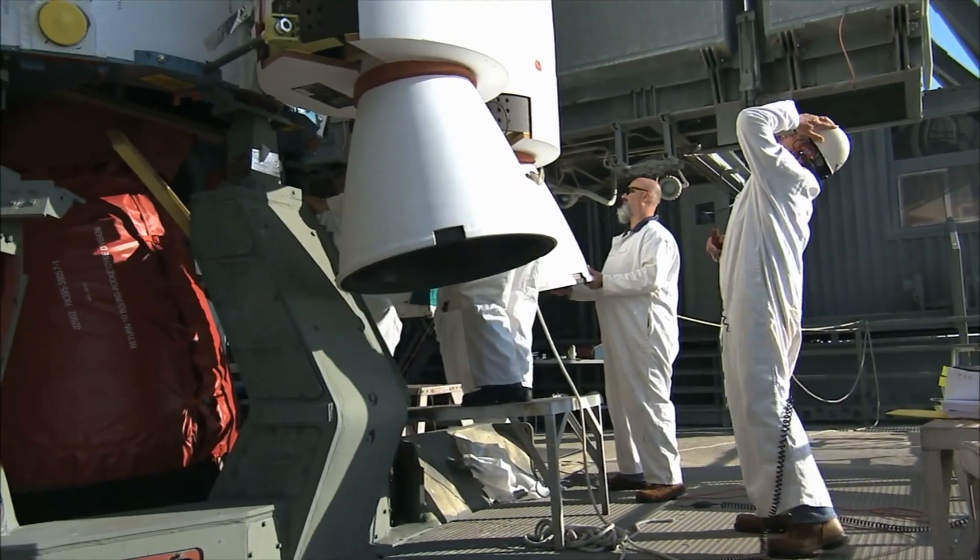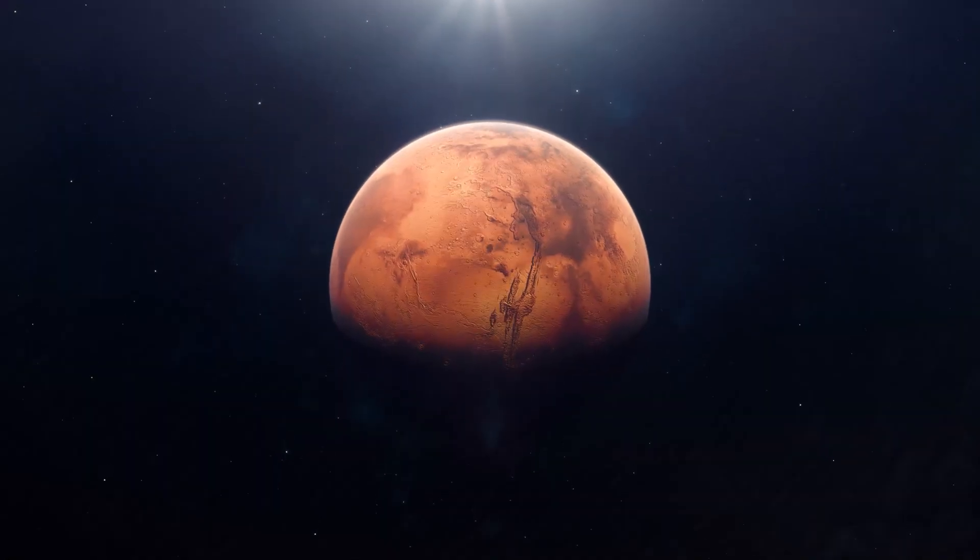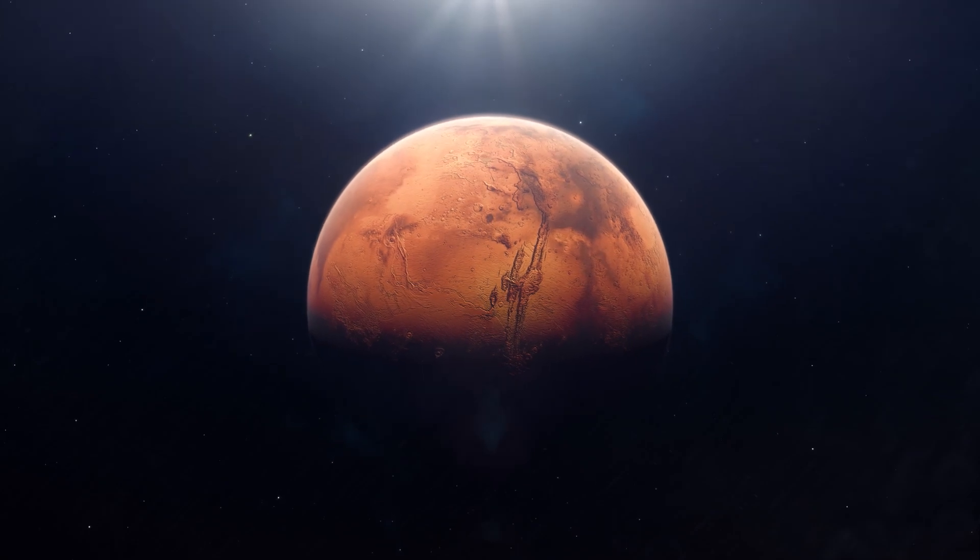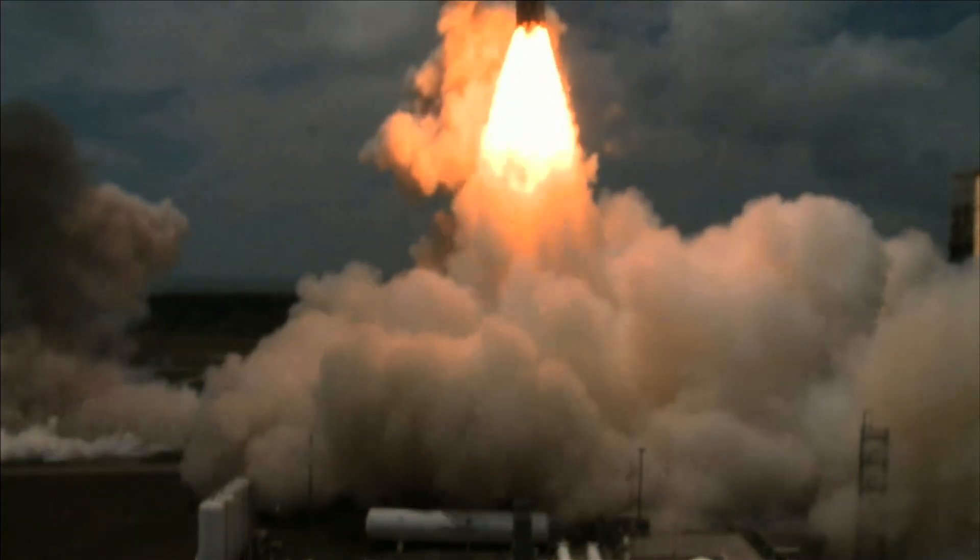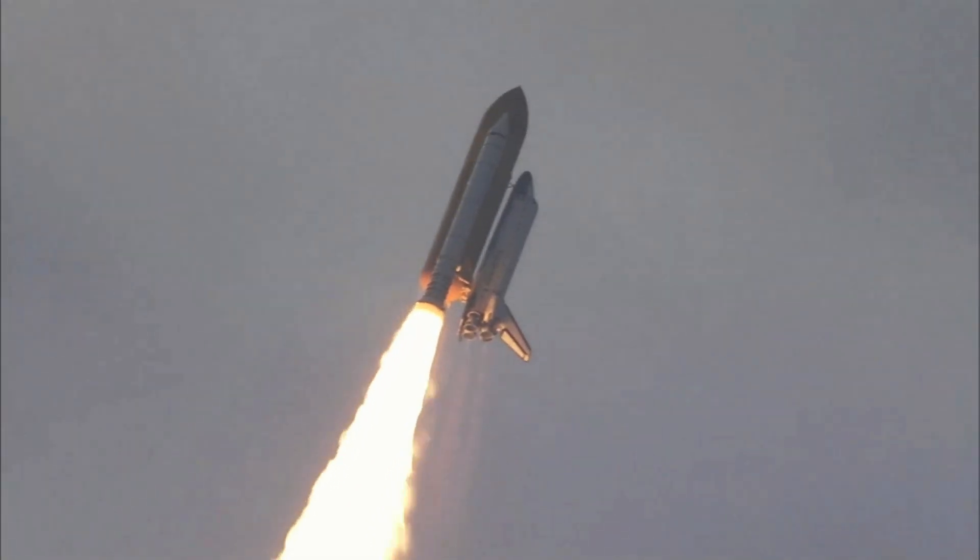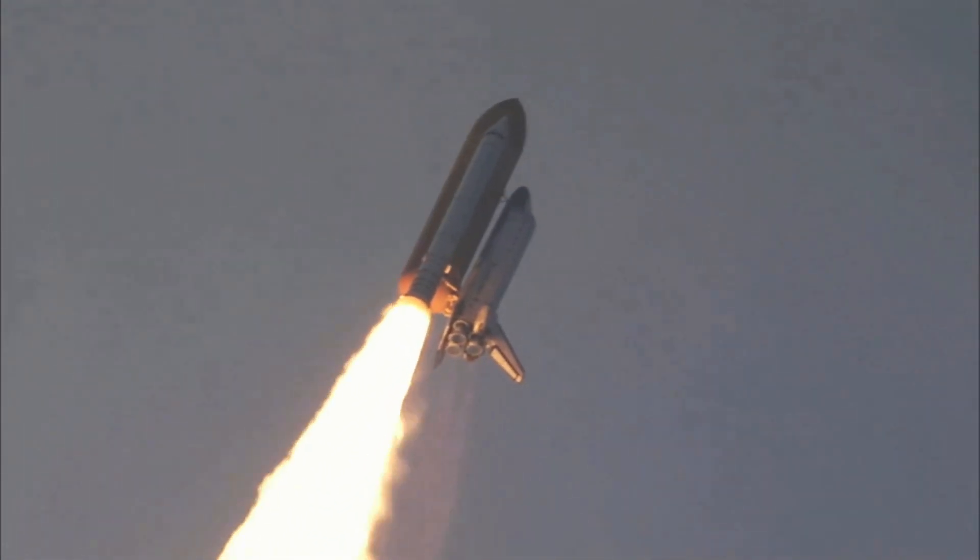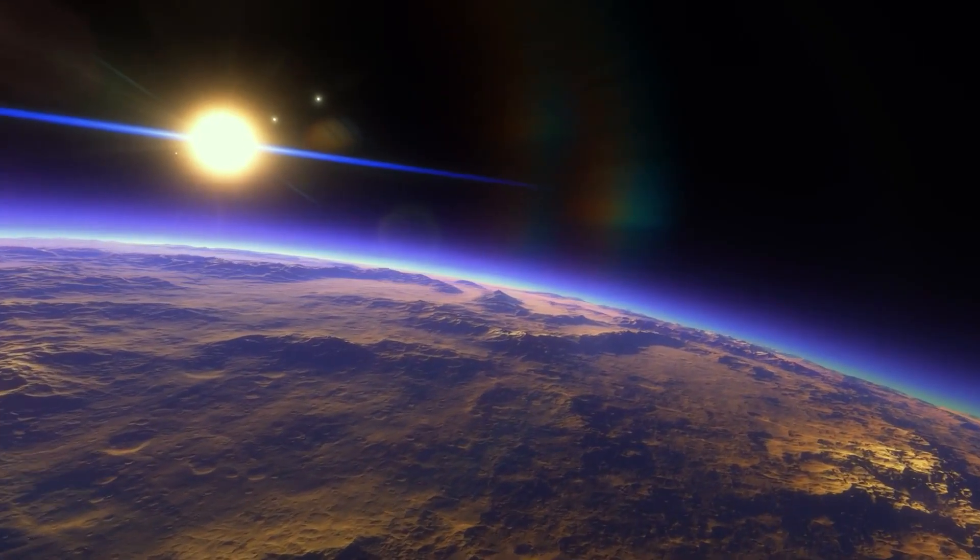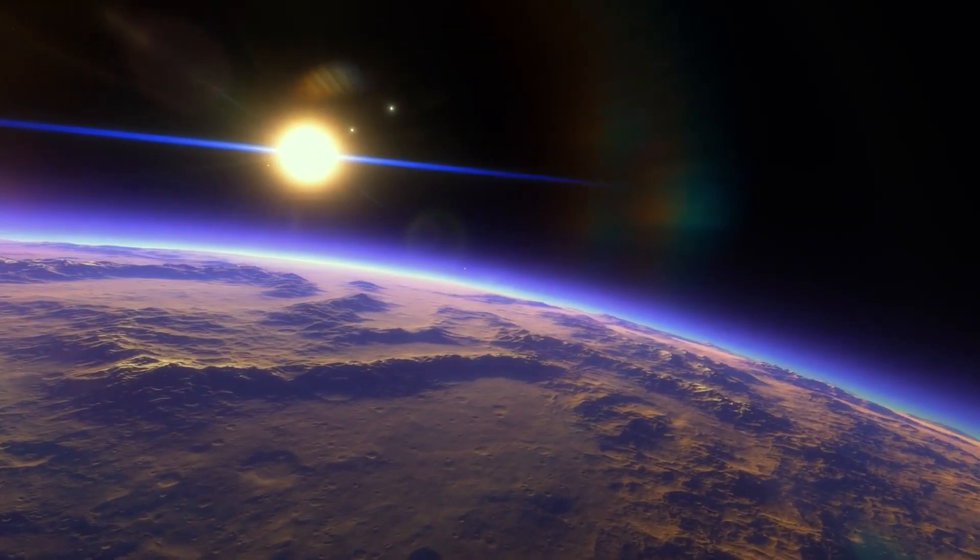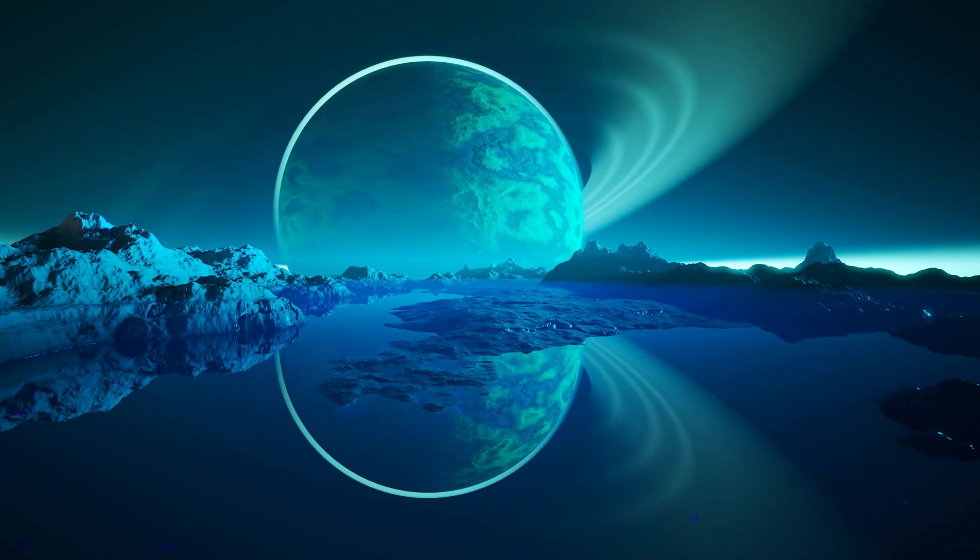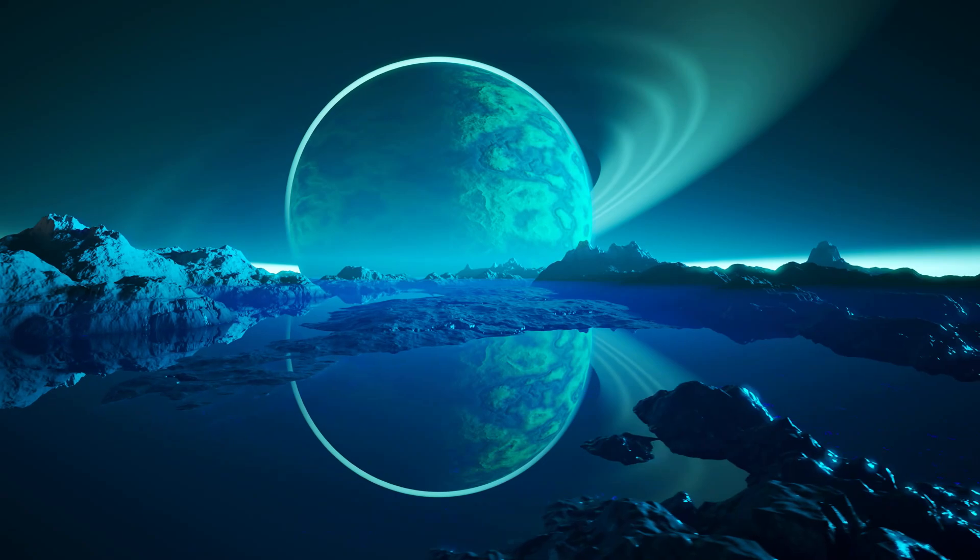This is the realm of planetary protection, a crucial aspect of space missions, especially those to places like Mars or Europa, which might host life. When we send spacecraft to other planets, there's a risk of forward contamination. That is, our space probes could carry Earth-based microorganisms to these other worlds. This could be problematic. Imagine discovering what we think is alien life on Mars, only to find out it's actually a microbe that hitchhiked from Earth. This would not only muddle our search for extraterrestrial life but could also potentially harm any indigenous life forms.